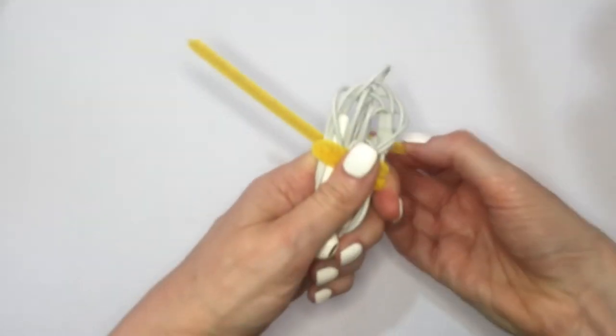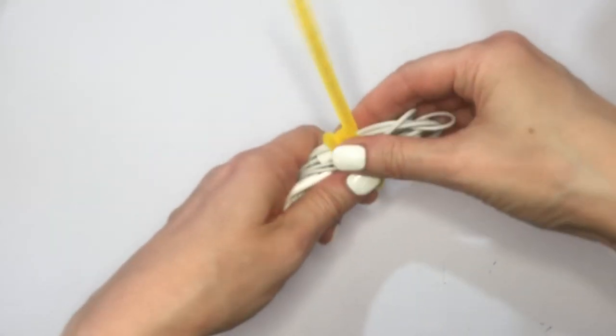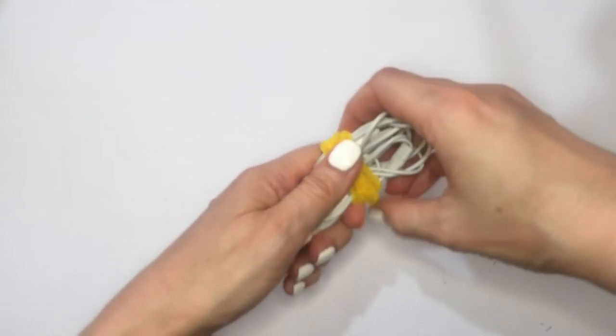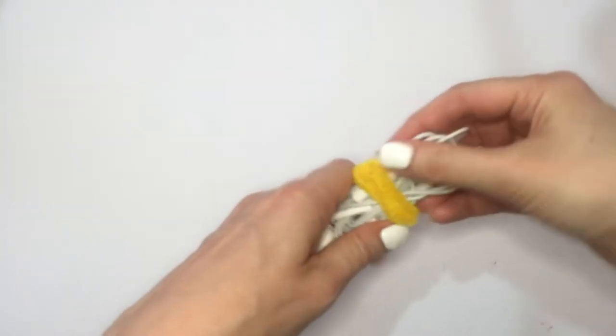So when you wrap it around like this, it holds its shape and you can reuse it as you use your headphones. When I place them inside a bag so my earphones don't go all over the place, I can push the pipe cleaner a bit and it stays in place.